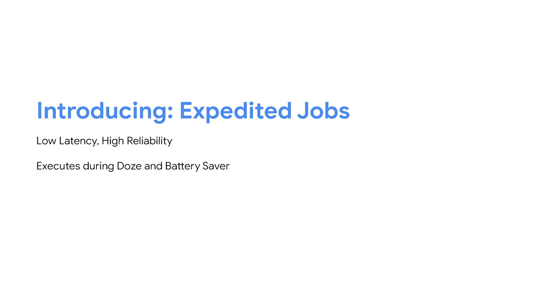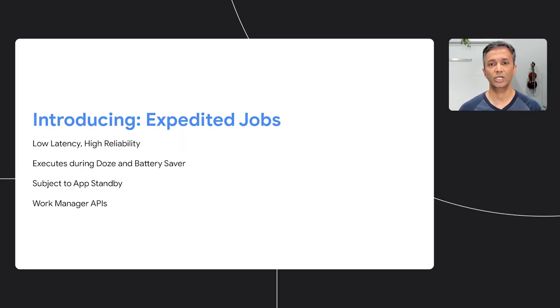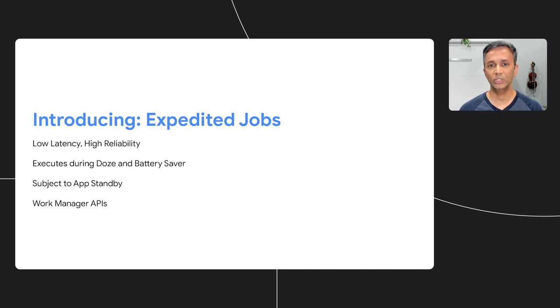This addresses the reliability concern. With the OS taking over scheduling and execution, expedited jobs are also subject to standby buckets. This means that less frequently used apps will get fewer opportunities to run these jobs from the background. The expedited job API is available through WorkManager as well since version 2.7. We recommend using WorkManager for expedited jobs wherever possible, since the library is unbundled from the OS, which makes it faster to supply updates and easier for you to react to future changes without having to deal with different Android versions yourself. With the foundational changes to foreground services and expedited jobs laid out, let's take the stream to Makoto.